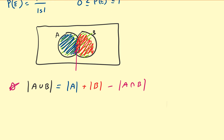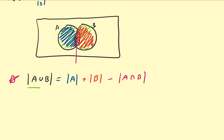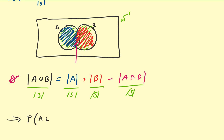So if I want to introduce a probability measure, I can simply divide both sides of this equation by the cardinality of the sample space S, which is the corresponding sample space they belong to. From here I can get the property that the probability of A or B — remember that union corresponds to OR — is equal to the probability of A plus the probability of B minus the probability of A and B.